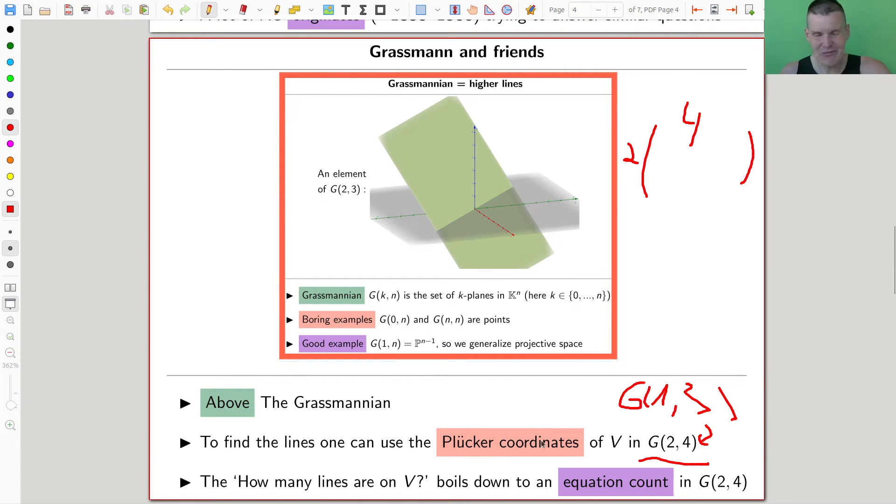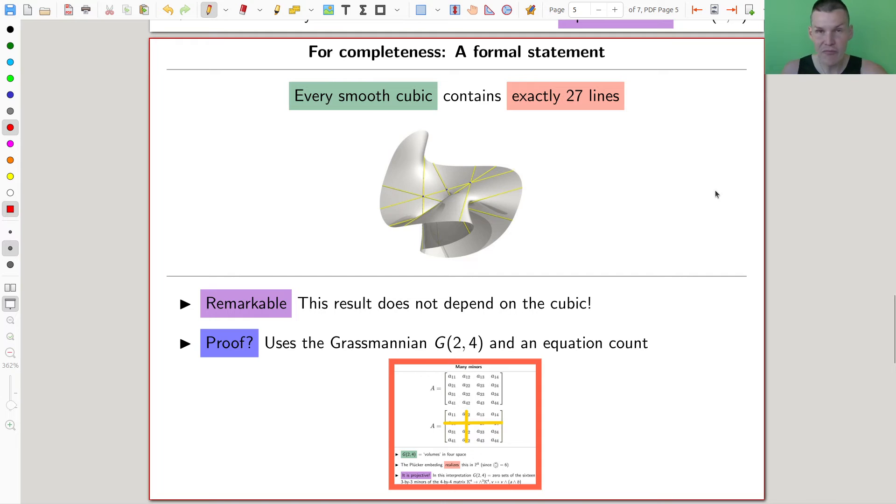And then you realize, you can actually do the Plucker coordinates for essentially everything, and then you get this fantastic statement that every cubic contains exactly 27 lines. So here's another one, this is, now this is really ridiculous, right?